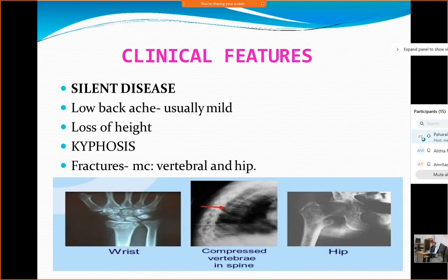They may complain of loss of height — because the vertebrae get compressed, the height may reduce over time. They may notice some humping of the back, which we call widower's hump in elderly ladies, or buffalo's hump or dowager's back. These are just fancy words; actually it is the kyphosis which they are developing.